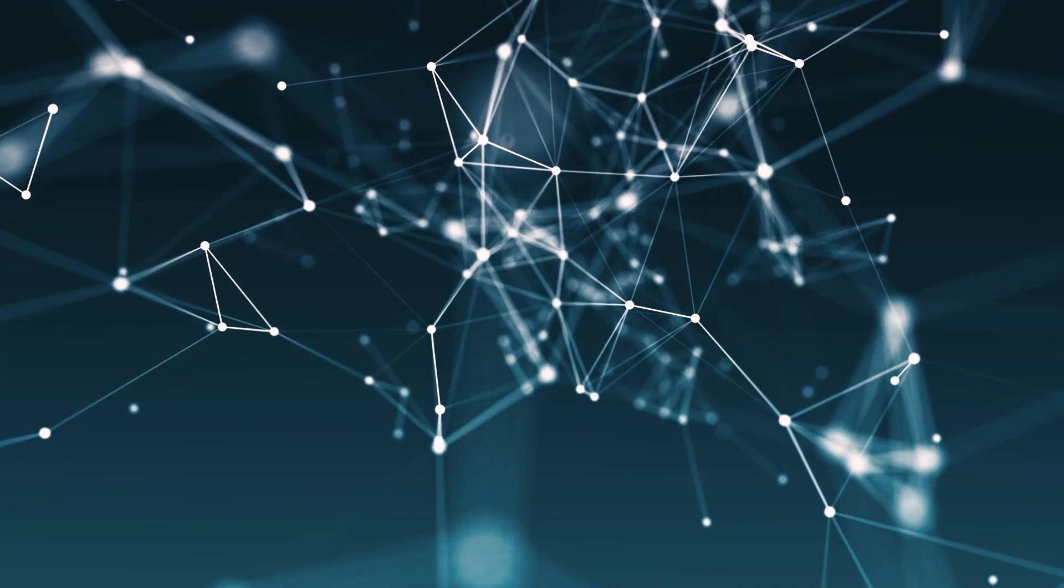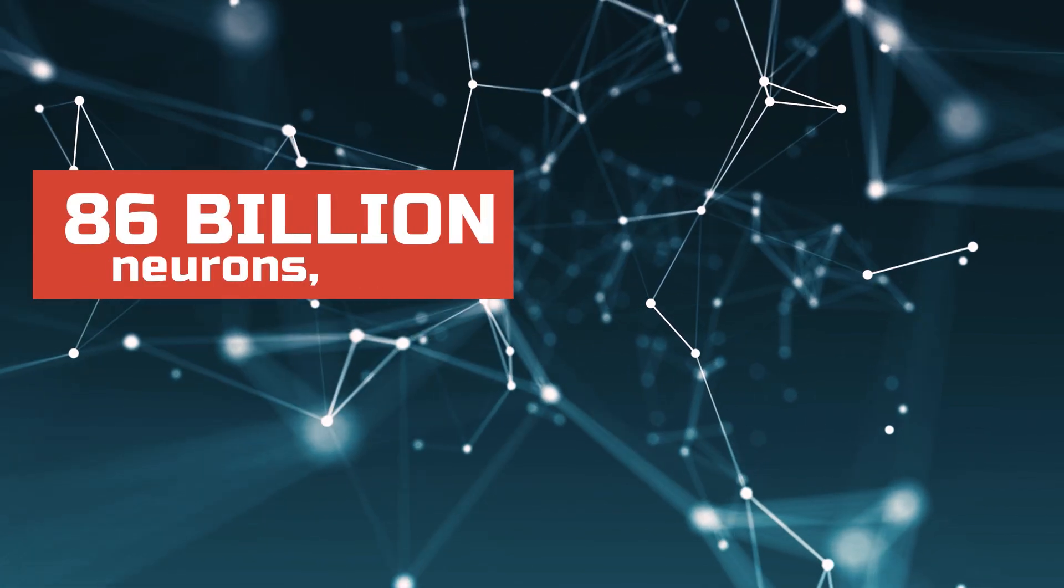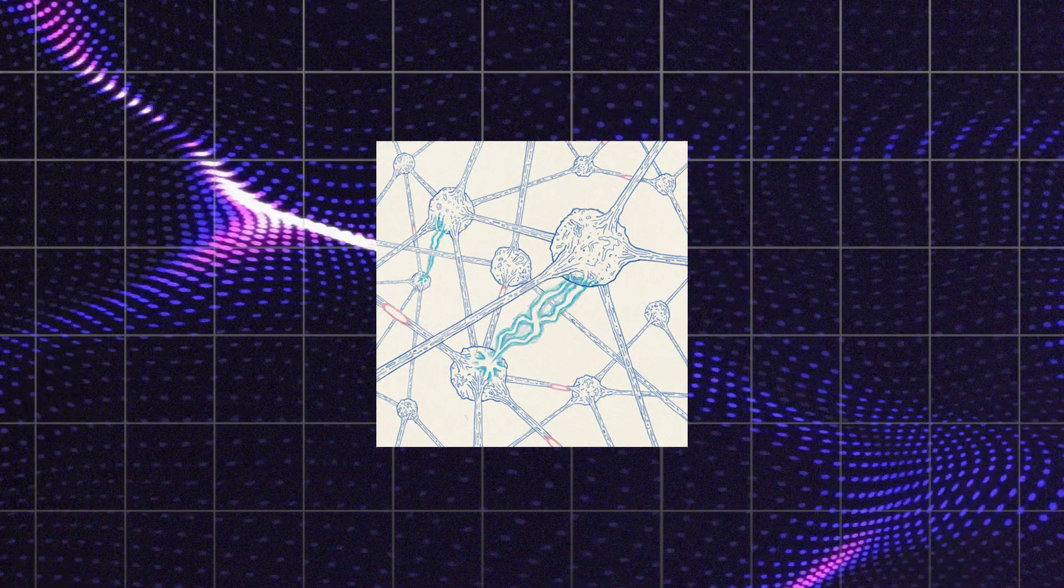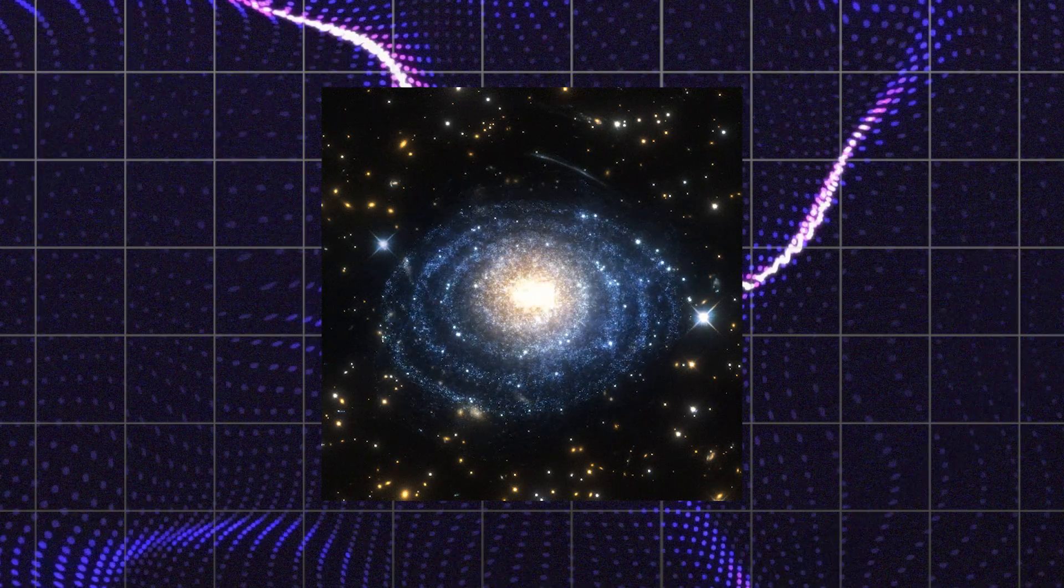Let's kick things off with a mind-bending fact. Your brain contains roughly 86 billion neurons, each connecting to thousands of others, creating a neural network more complex than all the stars in the Milky Way.